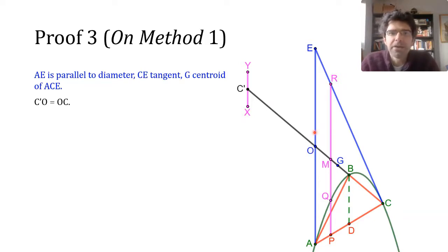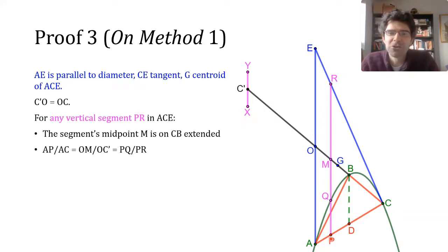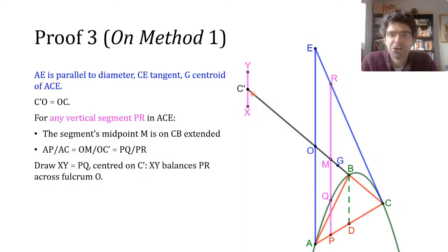So now we consider any vertical line across triangle AC, a line like PR. We know that AP to AC is equal to PQ to PR. We saw that before. And AP to AC, of course, is also equal to OM to OC, which is OM to OC dash. So what this means is if we put a copy of PQ sort of centred on the point C dash, it would balance the line PR across the fulcrum O.